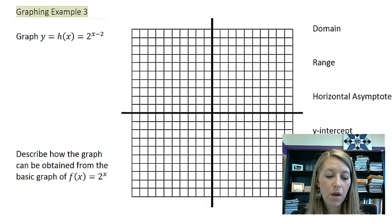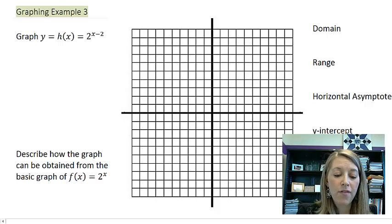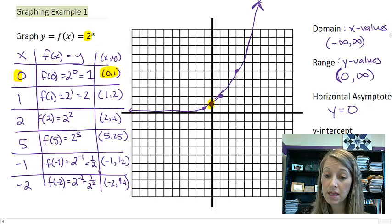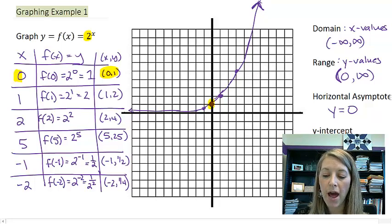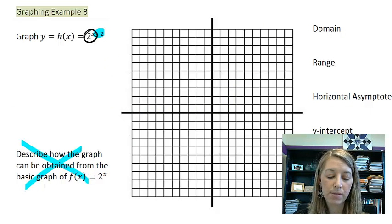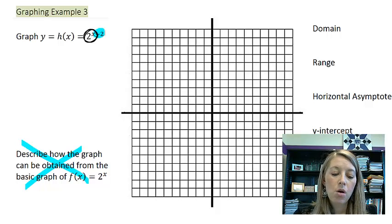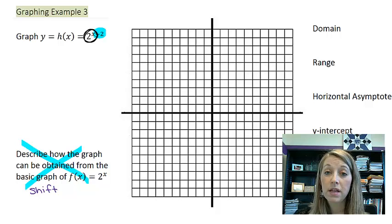So let's do a couple examples here. We want to graph h of x where it is 2 to the x minus 2. And we know what the graph of 2 to the x looks like because we actually already did that in our previous video. Now basically we just want to transform this graph by seeing how this minus 2 applies. So maybe I want to do this down here first. Describe how the graph can be obtained from the basic graph of 2 to the x.